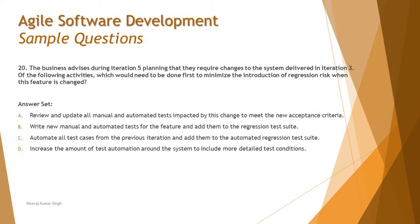Question 20 is about business advisors during iteration 5 planning requiring changes to the system delivered in iteration 3. Currently we are heading towards sprint 5 and the business is asking for a change to something already delivered in sprint 3. Of the following activities, which would need to be done first to minimize the introduction of regression risk when this feature is changed?